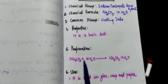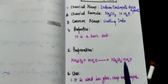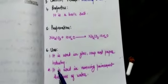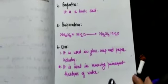The fifth salt is washing soda. Its common name is washing soda and chemical formula is Na2CO3·10H2O — sodium carbonate decahydrate. It is also a basic salt. Preparation involves mixing sodium carbonate with 10 molecules of water to get Na2CO3·10H2O. It is used in glass, soap, and paper industries, and for removing permanent hardness of water.